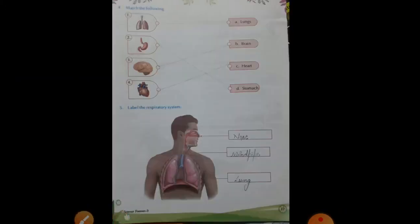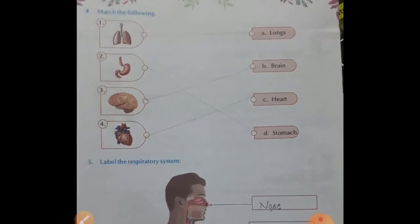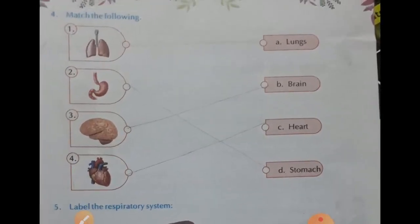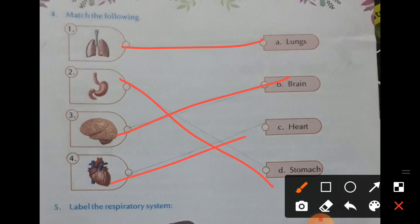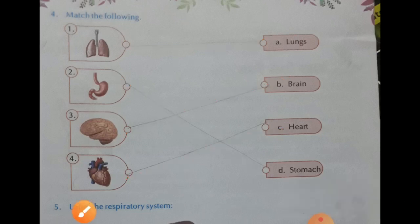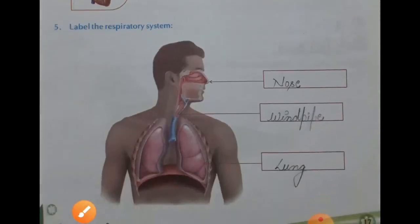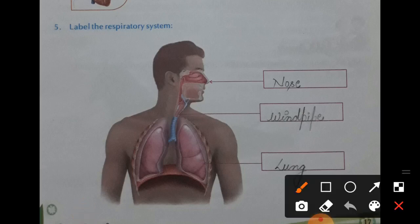Now on the next page, match the following. You have to match the pictures with their names. Here: lungs, stomach, brain, and heart. Now label the respiratory system. Here: nose, windpipe, and lung.